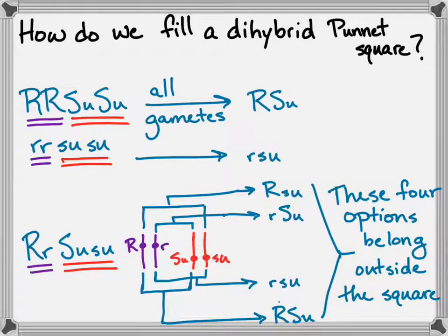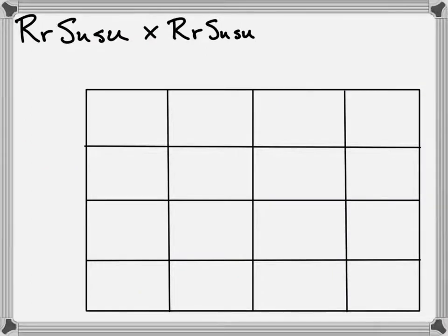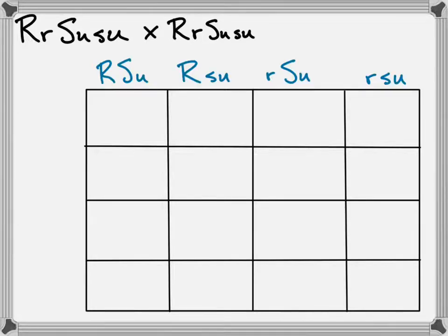All four of those gamete options are going to go on the outside of the Punnett square. Here we've got our Punnett square all set up and ready for a dihybrid cross. Both of these parents are heterozygous, so they're going to need four options across the top and across the side. If you had a homozygous dominant or recessive parent, you may not need as many boxes to represent the probability.